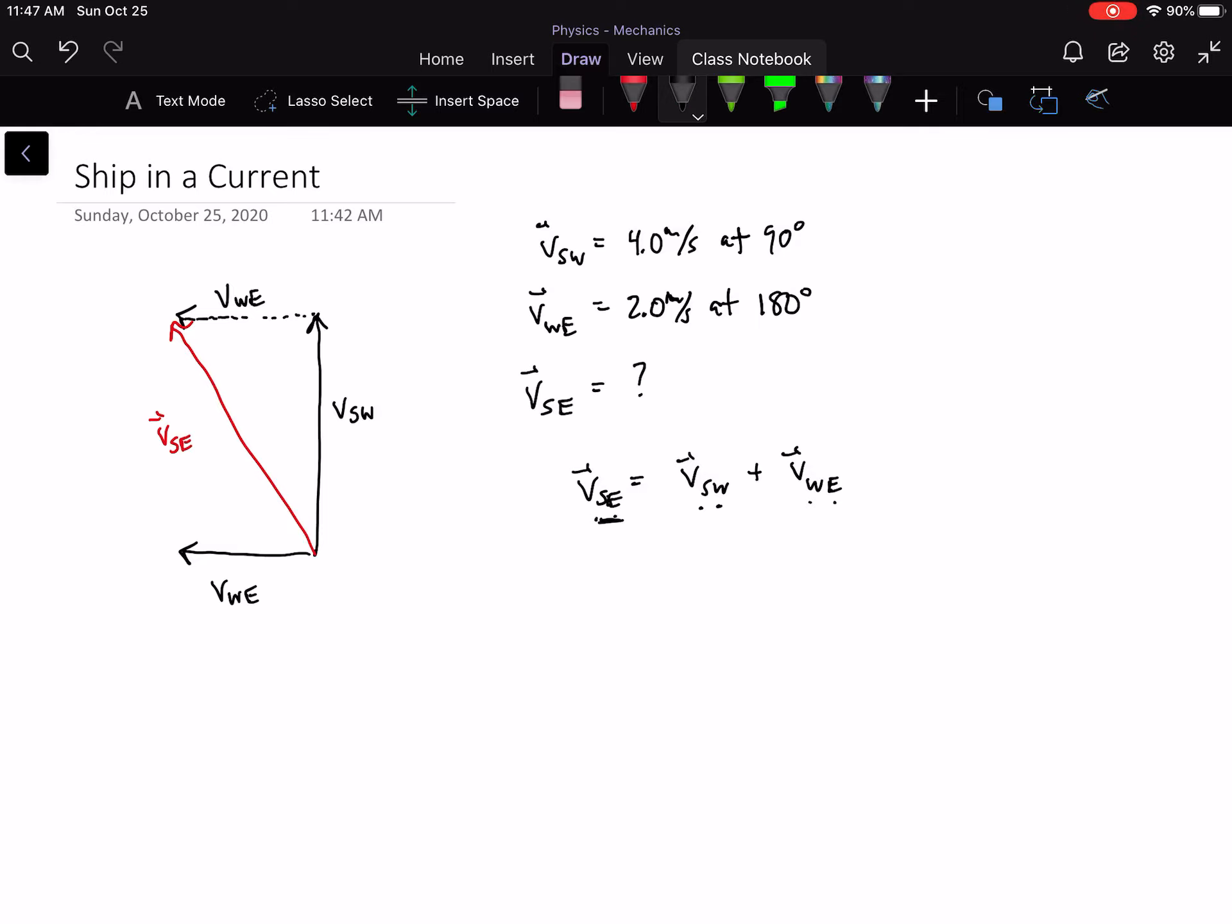We can skip through all the initial steps of 2D vector addition because these things are already on the y-axis and x-axis, respectively. We can skip to the part where the magnitude is the sum of all the y-components, which in this case is just 4 meters per second, and the sum of all the x-components, which is just 2 meters per second.